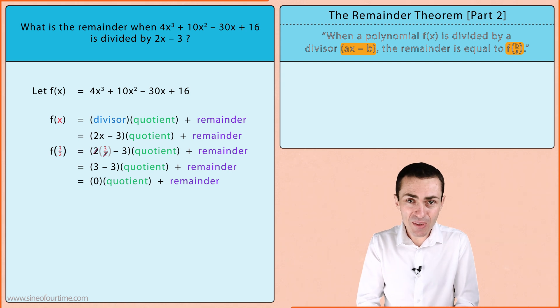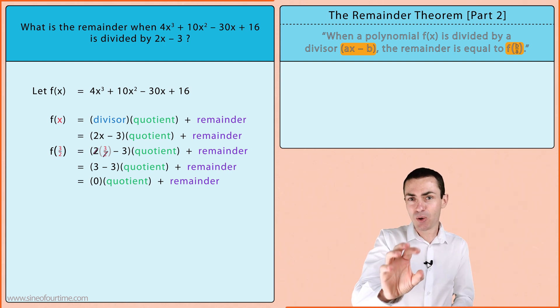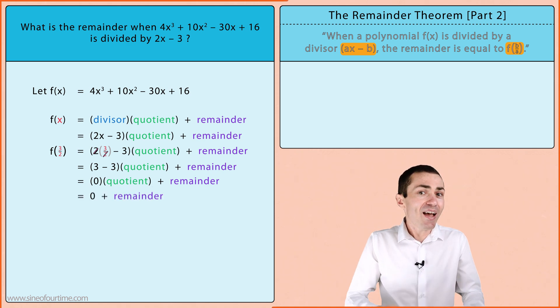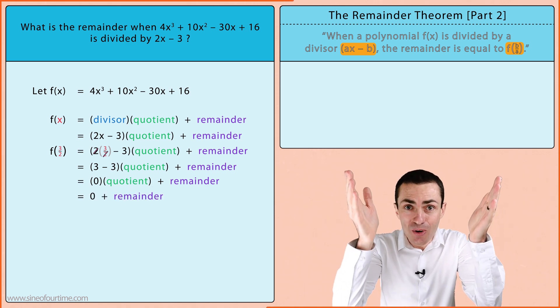And when we do that we are left with the case of zero multiplied by the quotient plus the remainder, which just gives us zero plus the remainder and ultimately just that remainder.